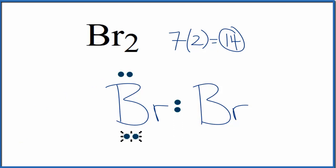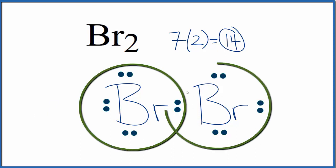At this point we've used 14 valence electrons. Each bromine has an octet—has eight valence electrons. These two are shared. So this is the Lewis structure for Br2, diatomic bromine, also called molecular bromine or bromine gas.